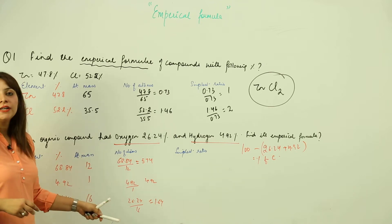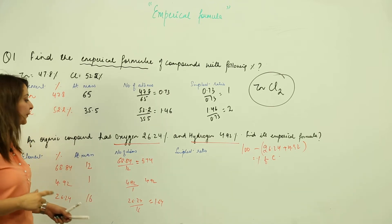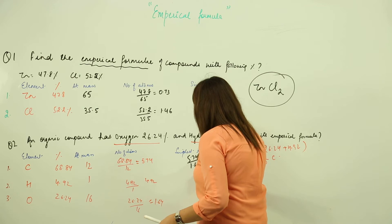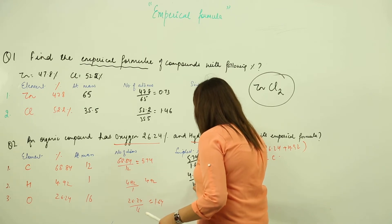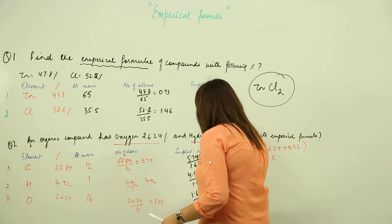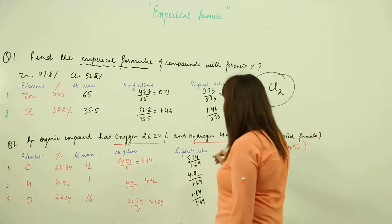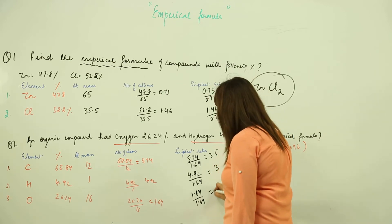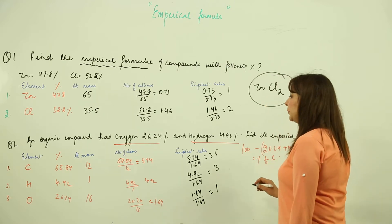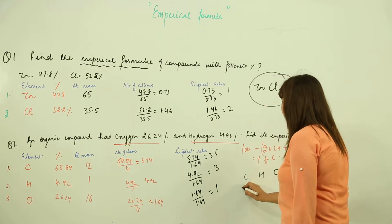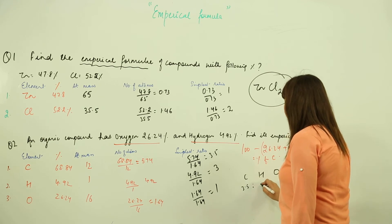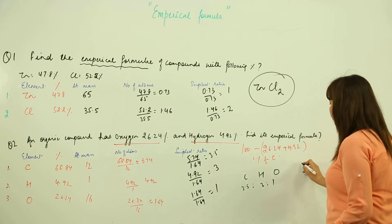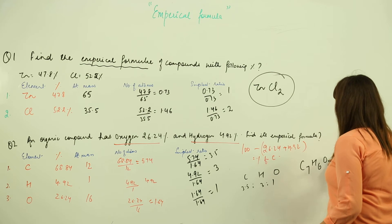We divide all values by the smallest, which is 1.64. This gives: carbon 3.5, hydrogen 3, and oxygen 1. Since we have a decimal ratio, we double all values to get whole numbers. The empirical formula is C₇H₆O₂.